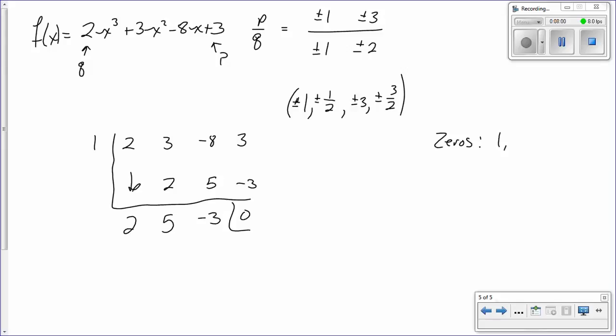So zeros. The first one we found is 1. So now, since we have a third degree, of course, this is a second degree. So this is 2x squared plus 5x minus 3. So now you could tic-tac-toe this, or factor it by grouping, however you want to do it. I'm a factoring by grouping kind of guy.